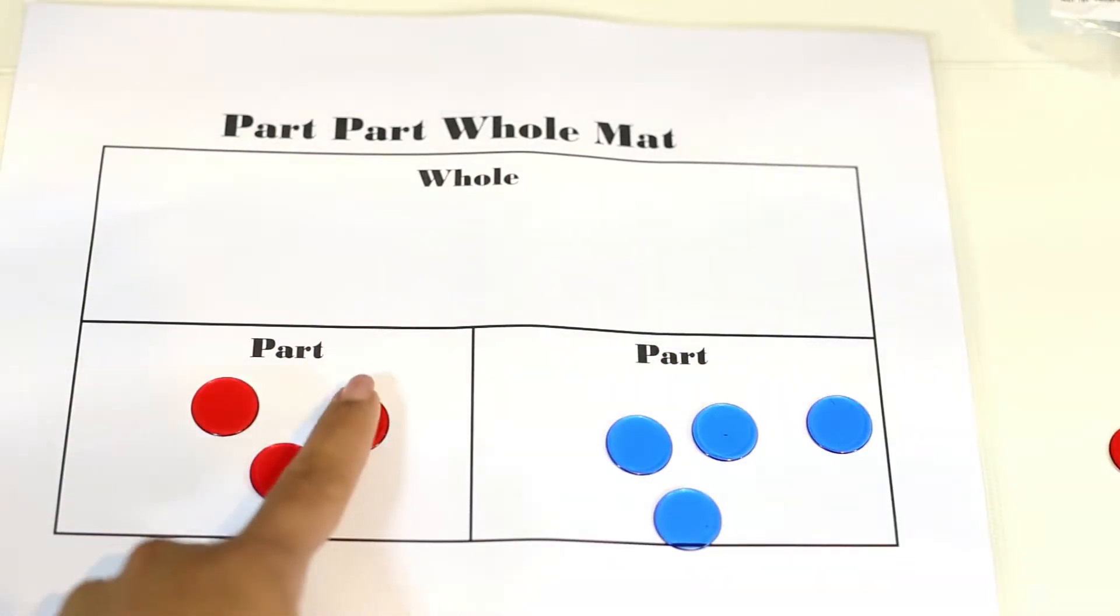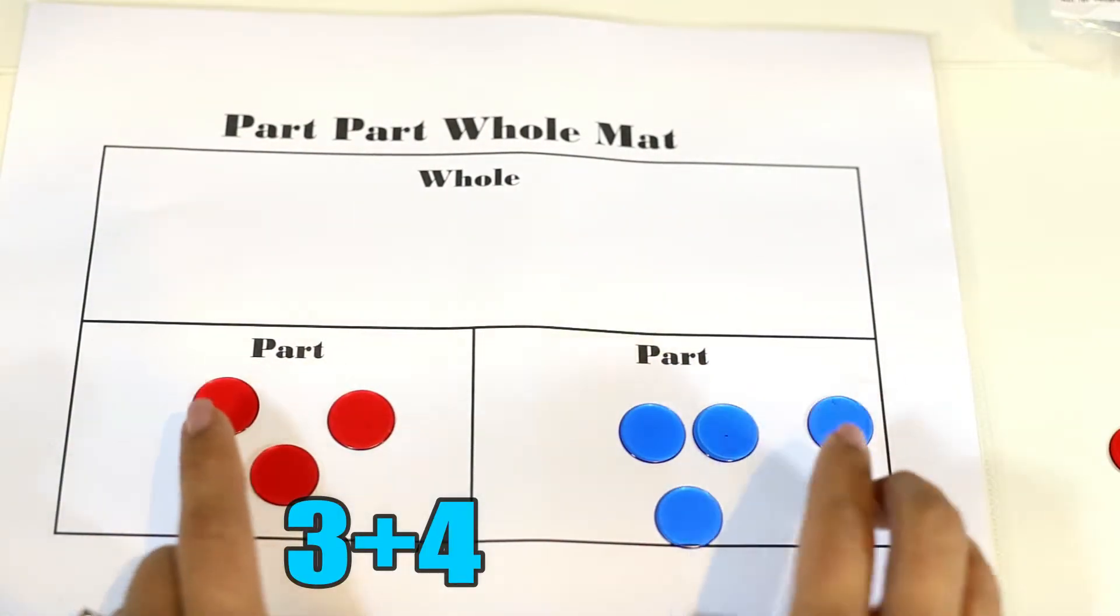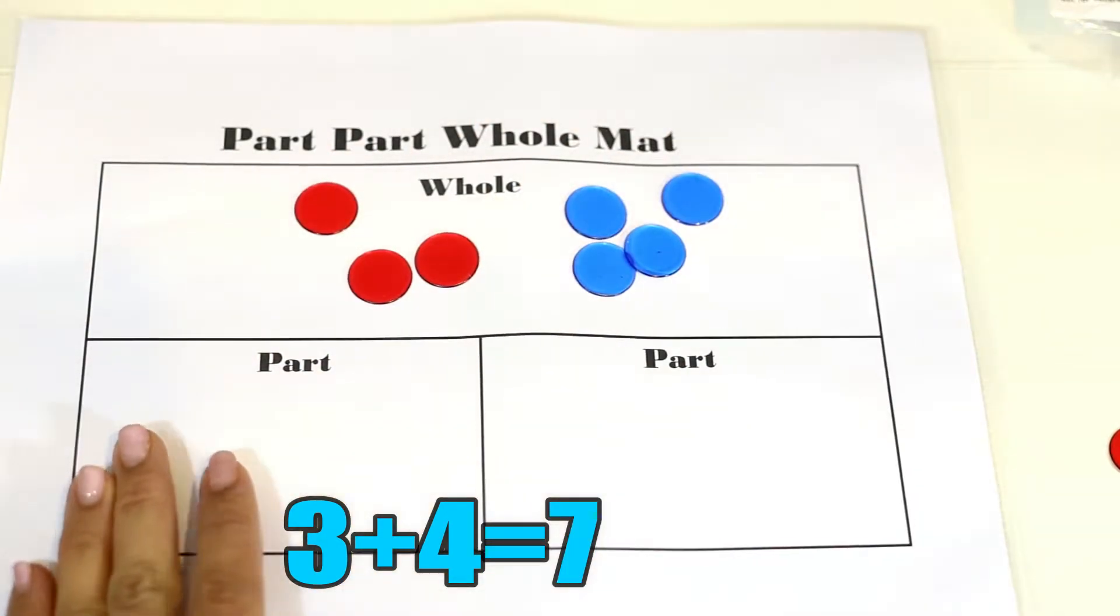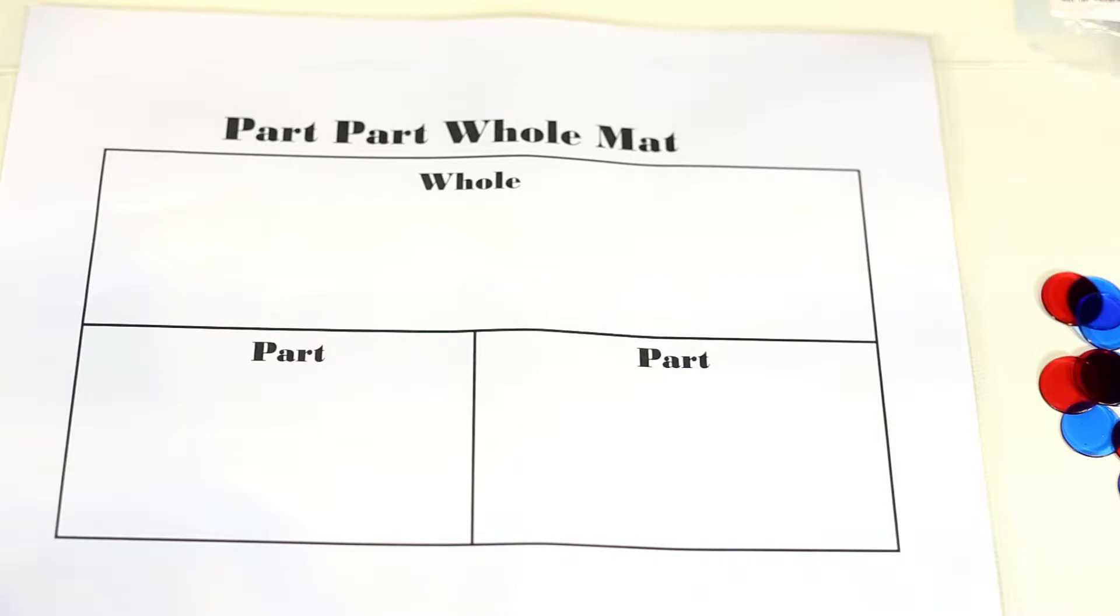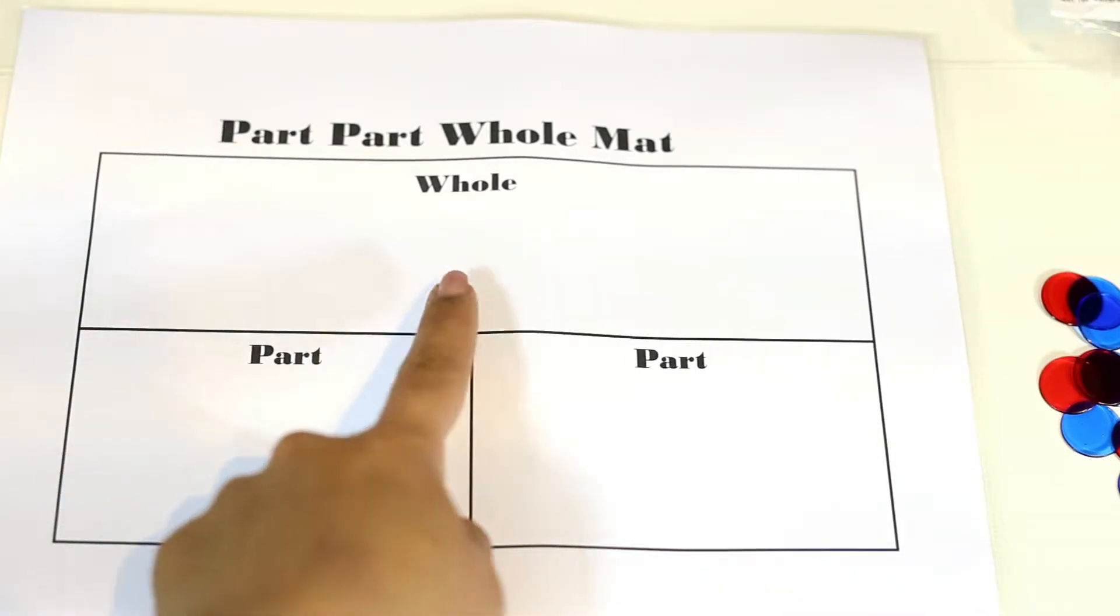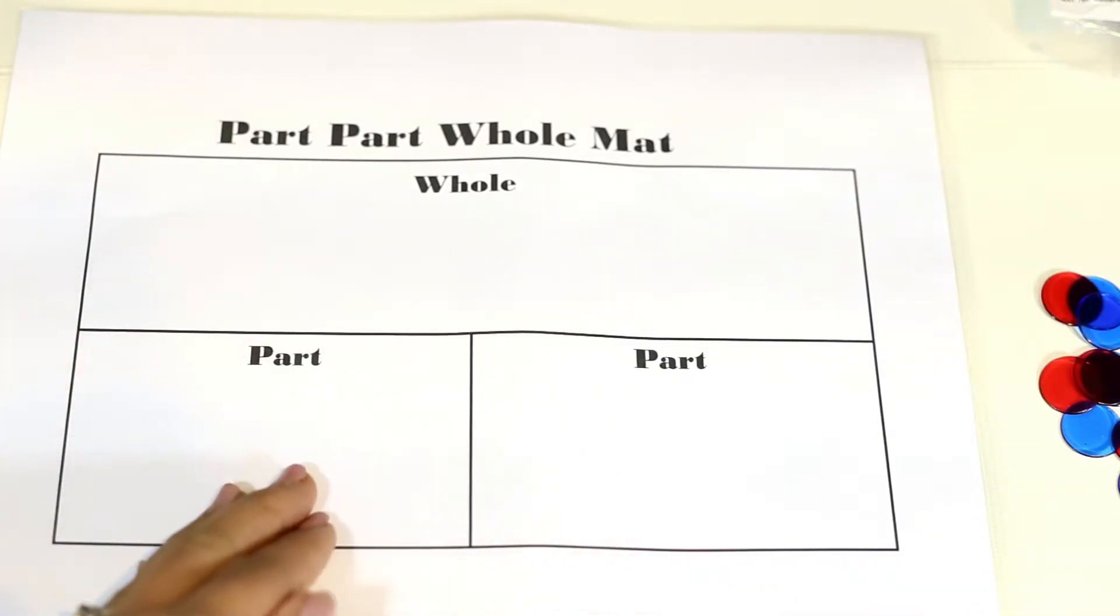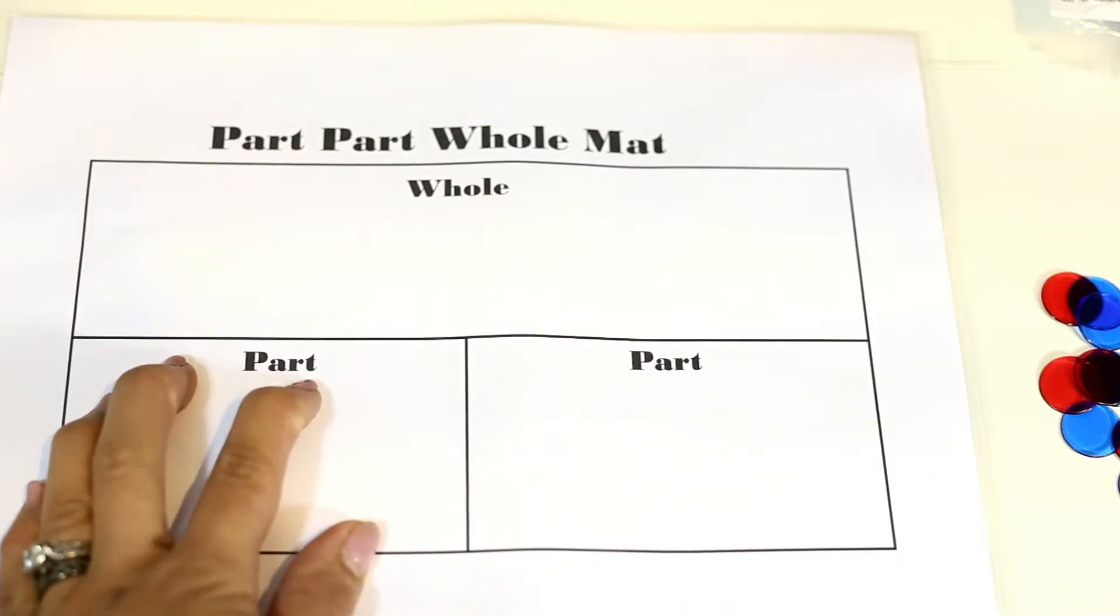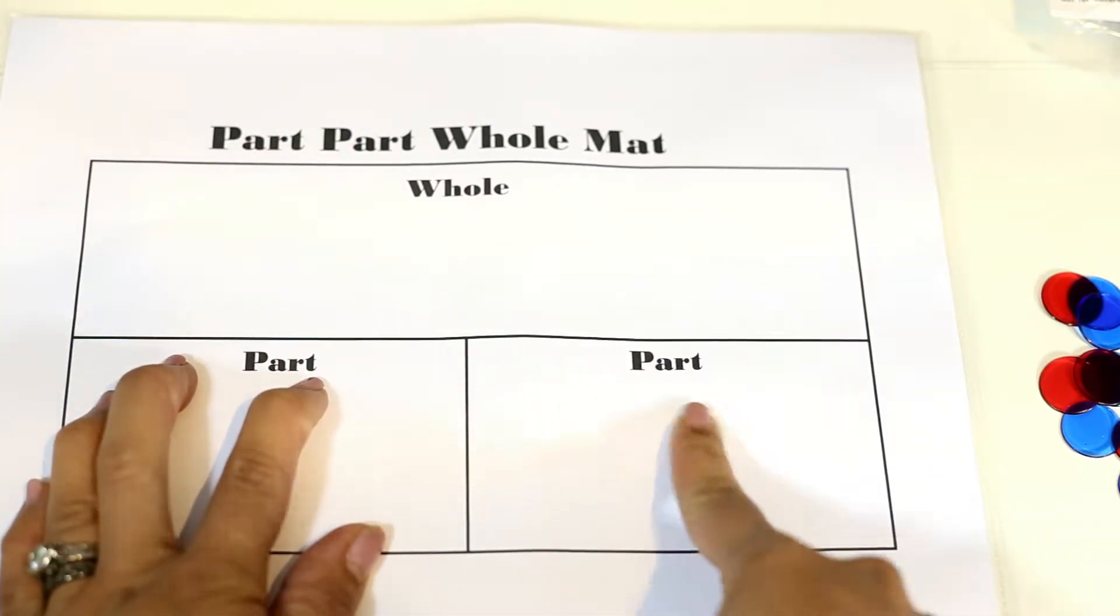For subtraction, using the part-part-whole mat is pretty much in reverse. We start with the whole. We separate the part that we know to find out the missing part.